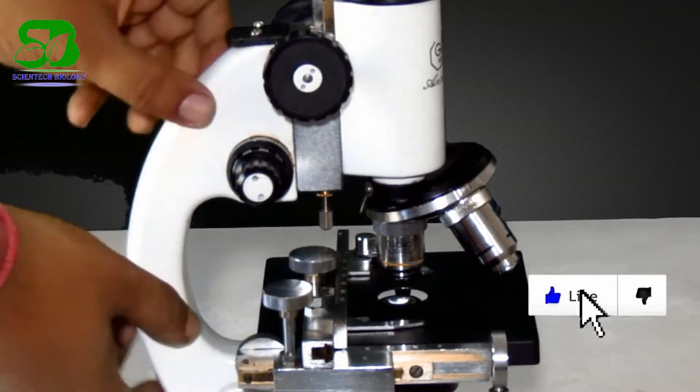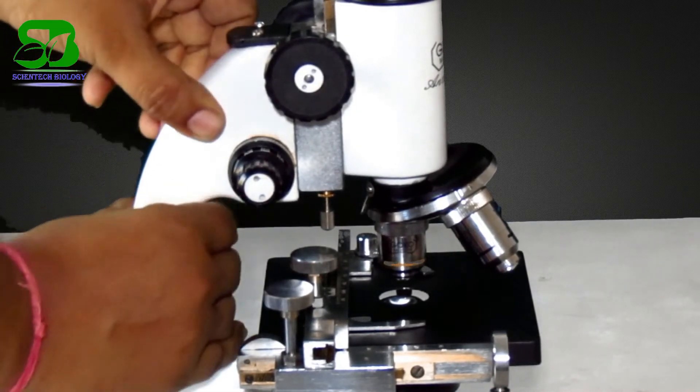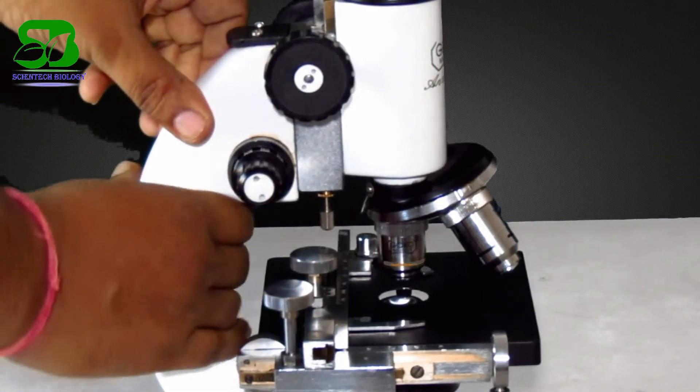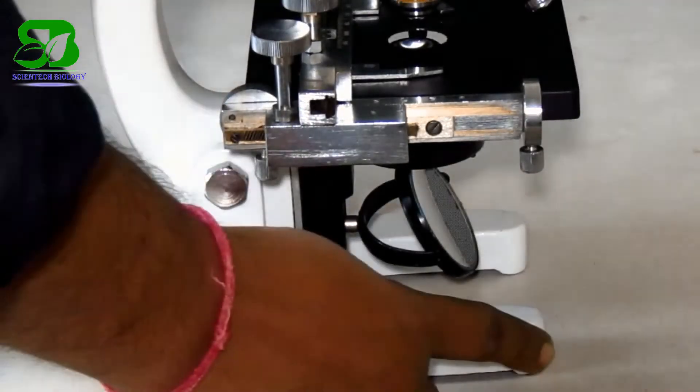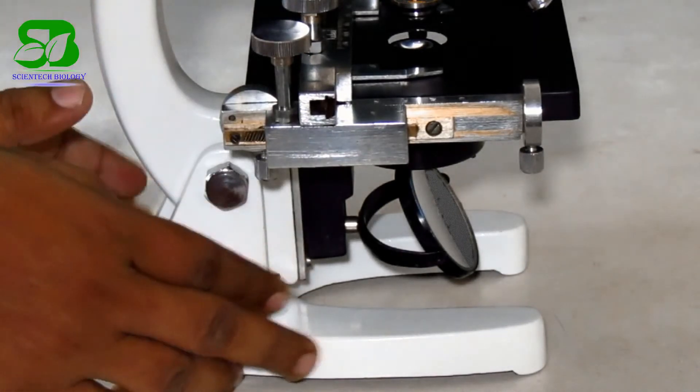This curved part of the microscope is called the arm and it holds the body tube and the stage. Here at the base is the supporting stand that rests on the table for support of the microscope.